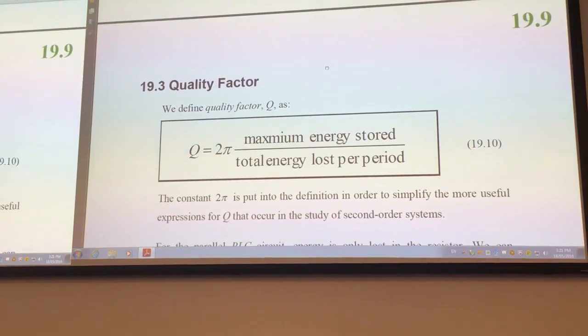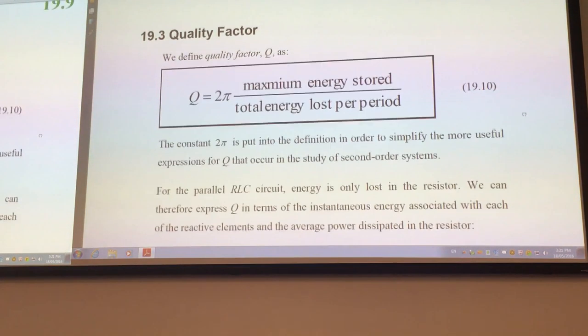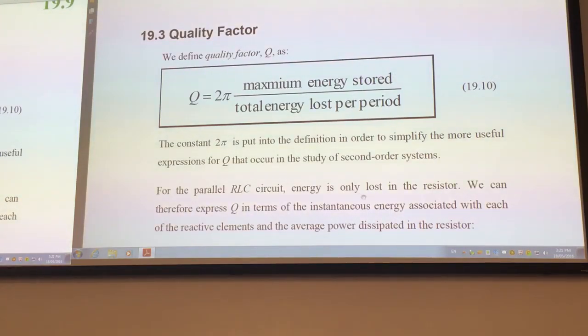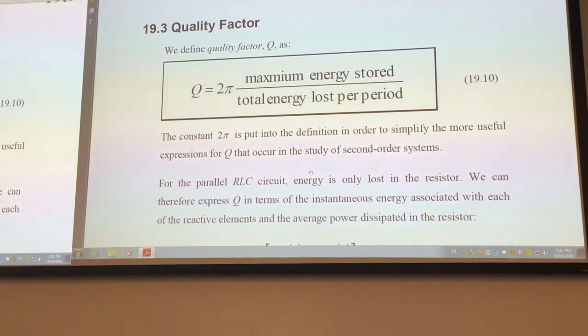When you look at resonance circuits, you very often see in literature something called the quality factor or Q factor, or simply Q. It's quite a difficult definition to apply to a general circuit, but it simplifies considerably if you just look at pure RLC, both parallel and series. In general, the quality factor is defined by the ratio of energies.